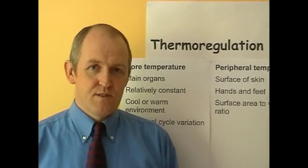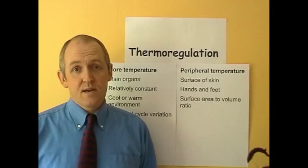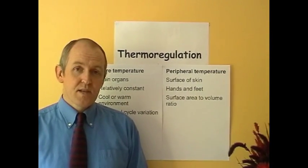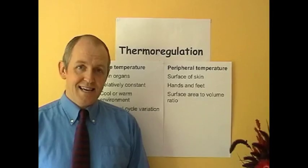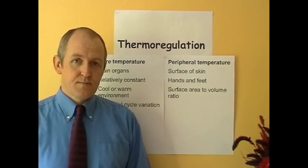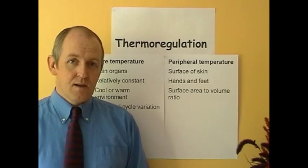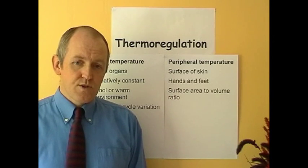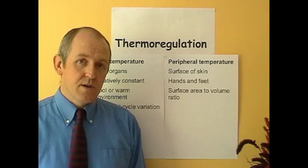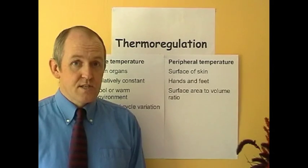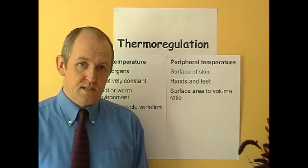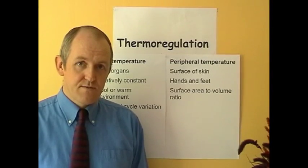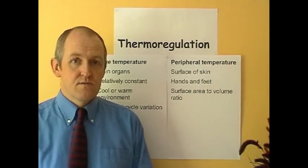So that's core temperature. Now, peripheral temperature is the temperature on the surface of the body. The temperature in the skin, on the surface of the skin. And it's also the temperature in the hands and the feet in the limbs of the body. Again, this varies quite a bit as we'll see shortly, depending on how warm or cold a day it is, what the peripheral temperature is. Because later we'll notice that limbs have quite a large surface area in relation to their volume. So core temperature at the centre, peripheral temperature at the surface, and in the peripheries, the limbs of the body.